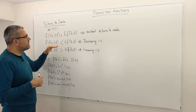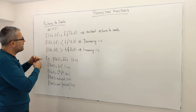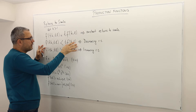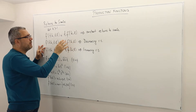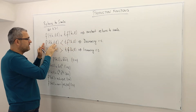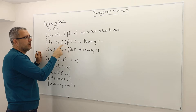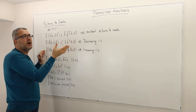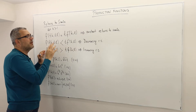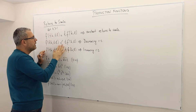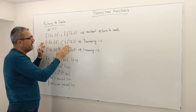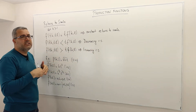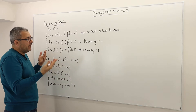Decreasing returns to scale means I multiply my inputs by t, but my output is not going to be multiplied by t — it's going to be less. So if I double my inputs, my output will not be doubled; it's going to be less. If this is the case for any t, we call the production function decreasing returns to scale.